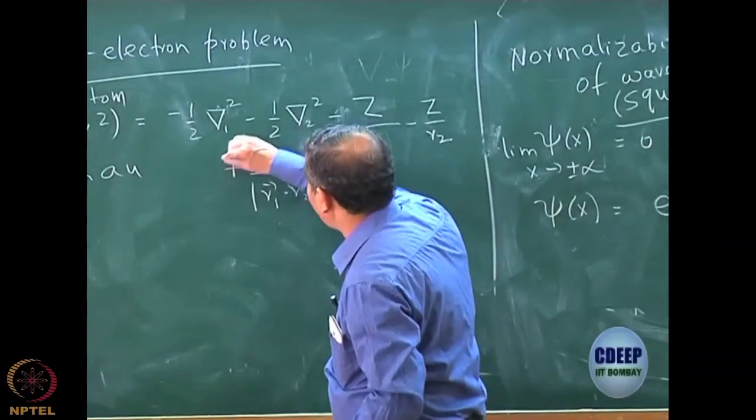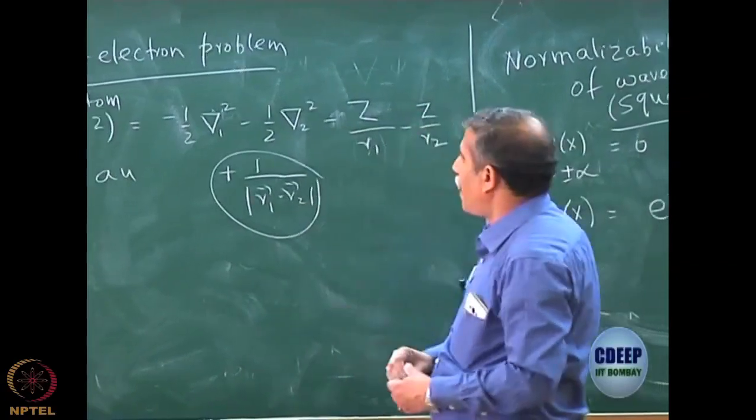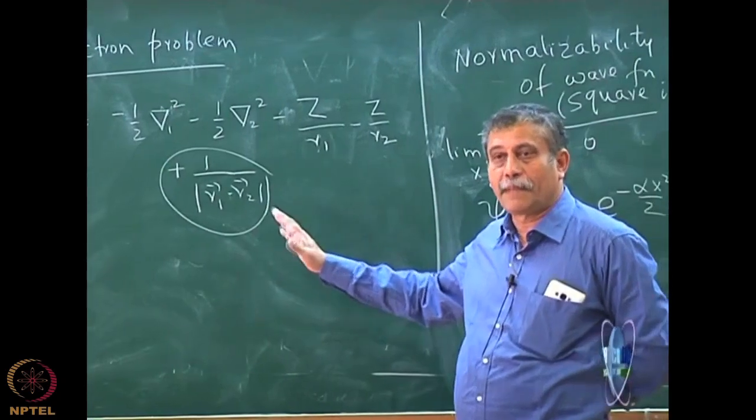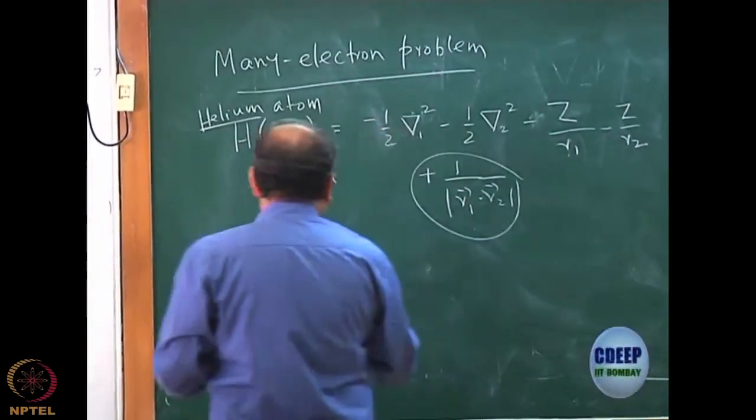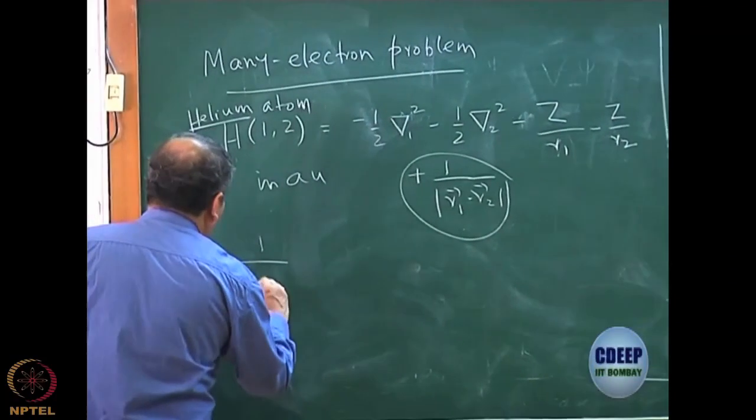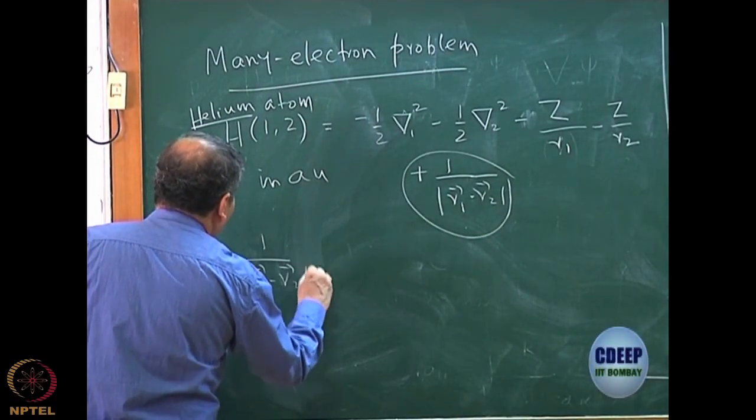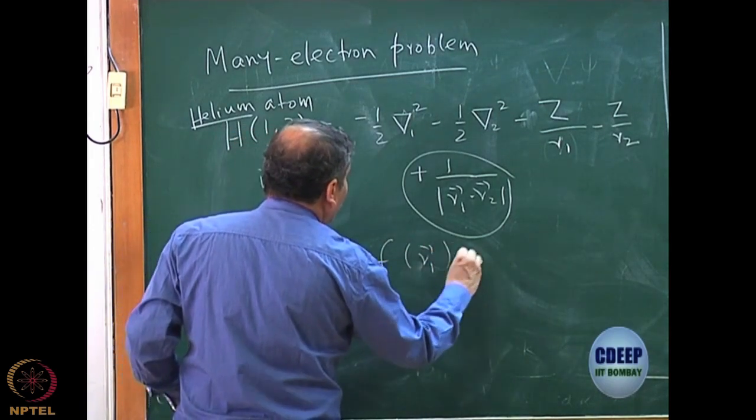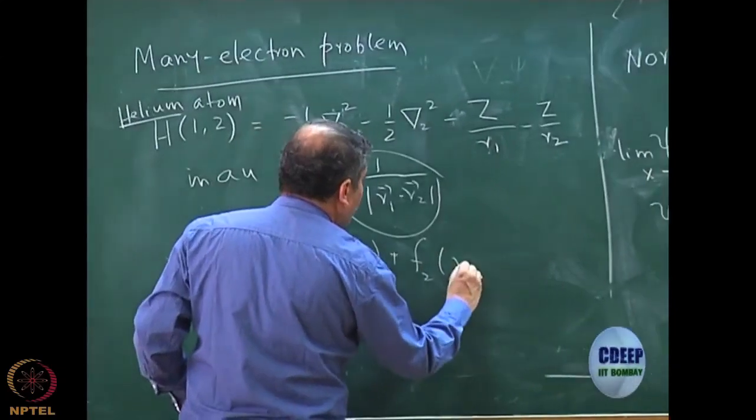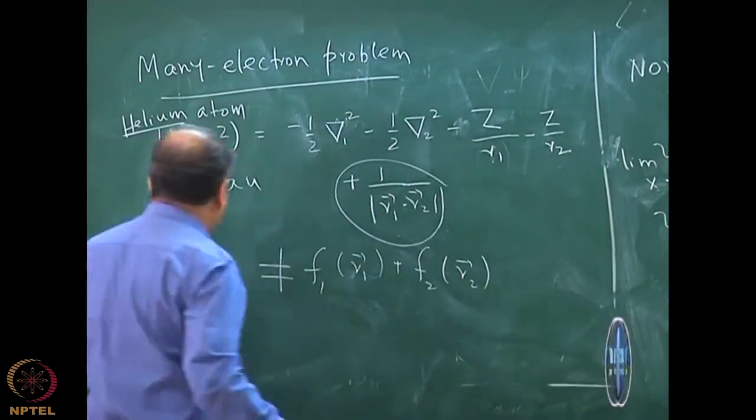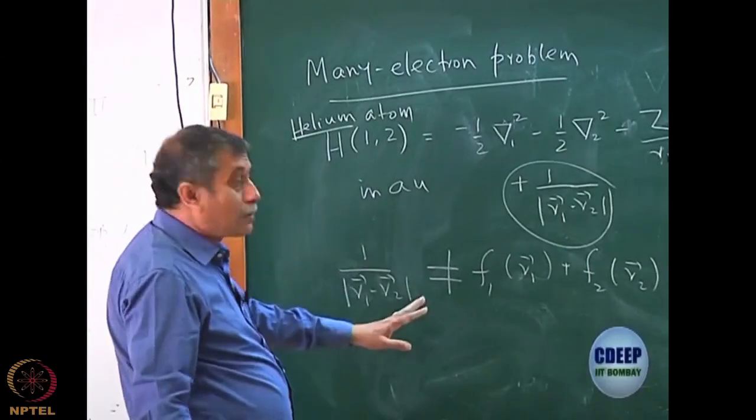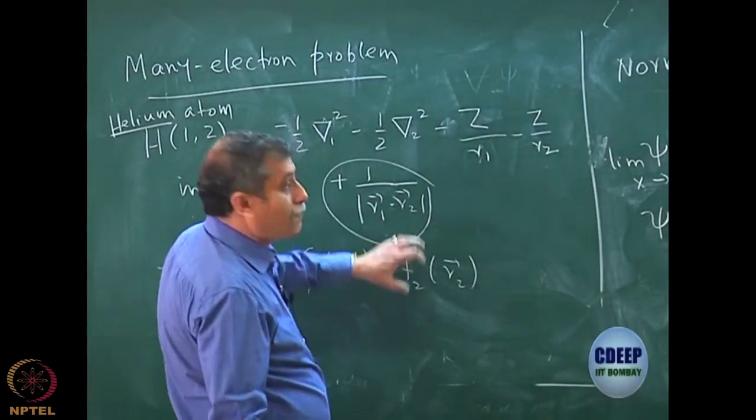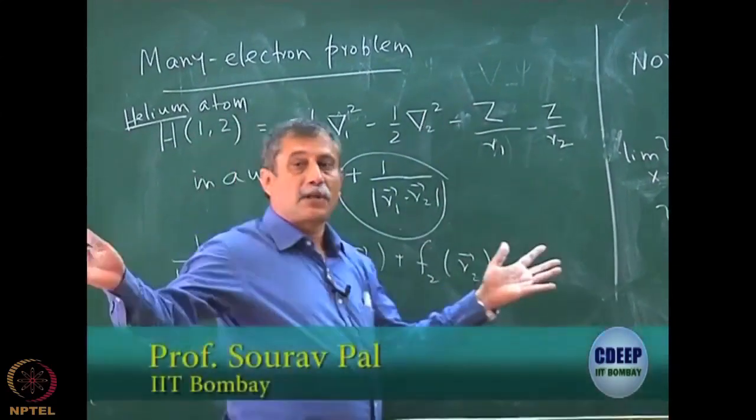But the problem really is this part - this is a part which cannot be split as a function of 1 and function of 2. Mathematically it is not possible. You cannot write this term 1 by modulus R1 minus R2 as any function of R1 plus any other function of R2. If it was possible mathematically, then I would have put this R1 function with 1, R2 function with 2, and the entire problem would have been exactly solved.